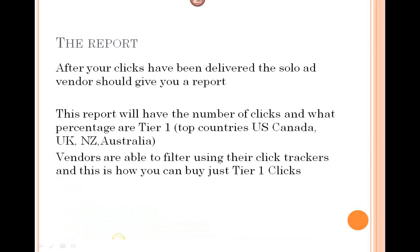After your clicks have been delivered, the solo ad vendor should give you a report. The report will show the number of clicks and what percentage were tier 1. Tier 1 means top countries such as the US, Canada, United Kingdom, New Zealand, and Australia. With their trackers they're able to filter out clicks from other countries to make sure you get exactly what you're paying for. They usually charge more for tier 1 clicks because they might have to send 170 clicks to get you 100 tier 1 clicks.